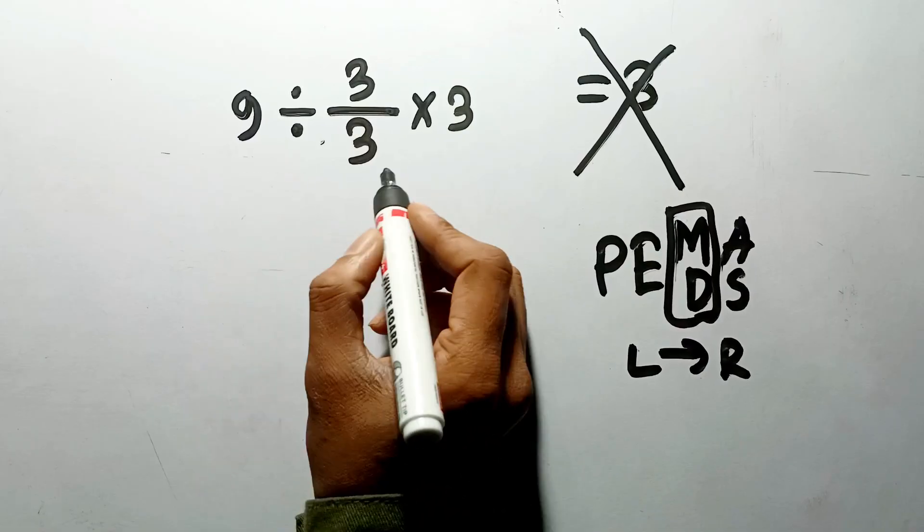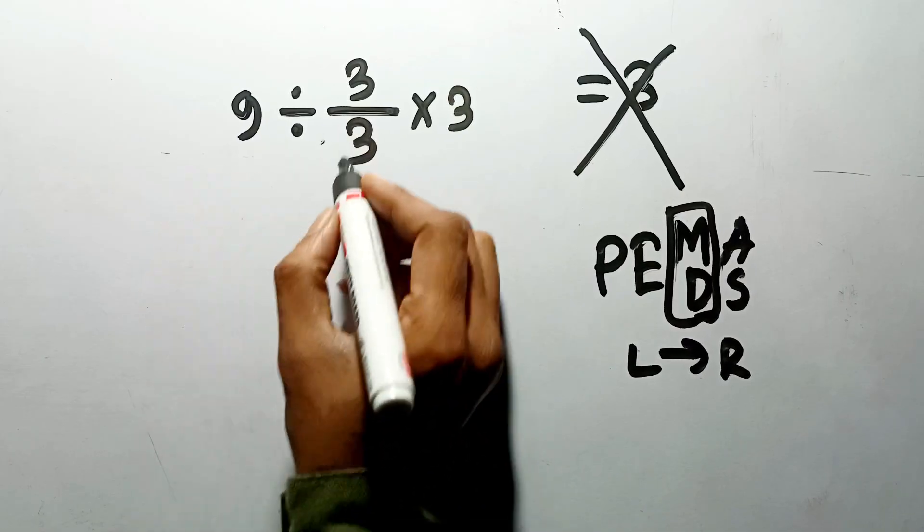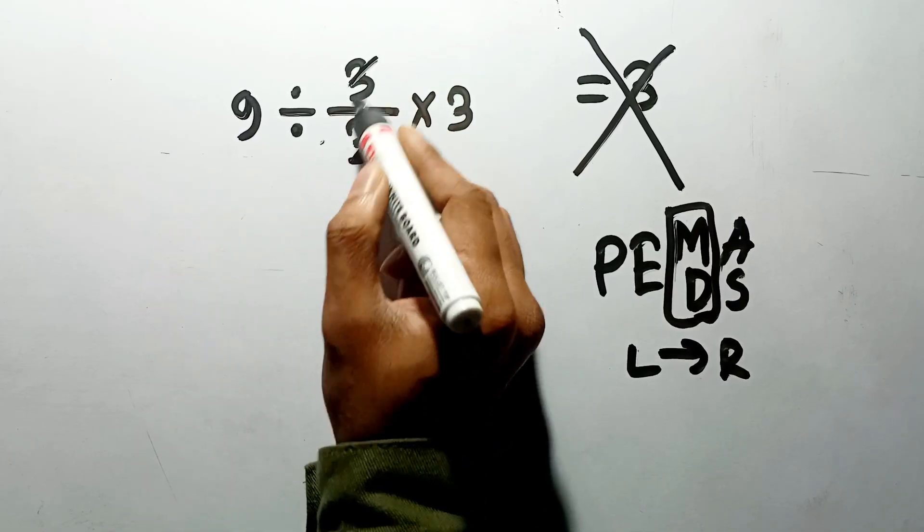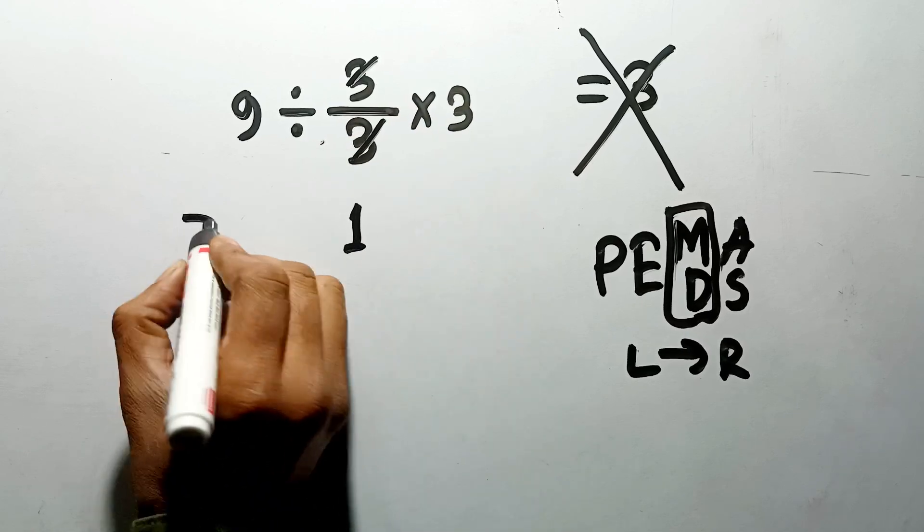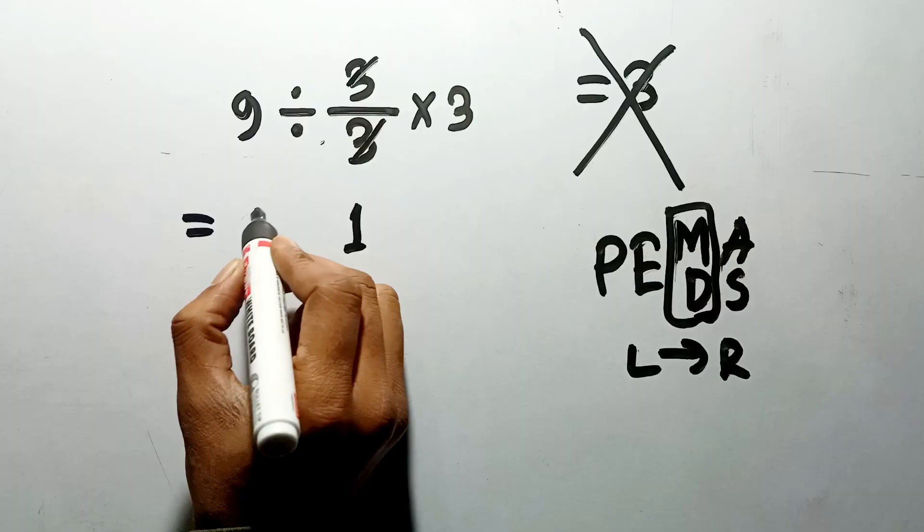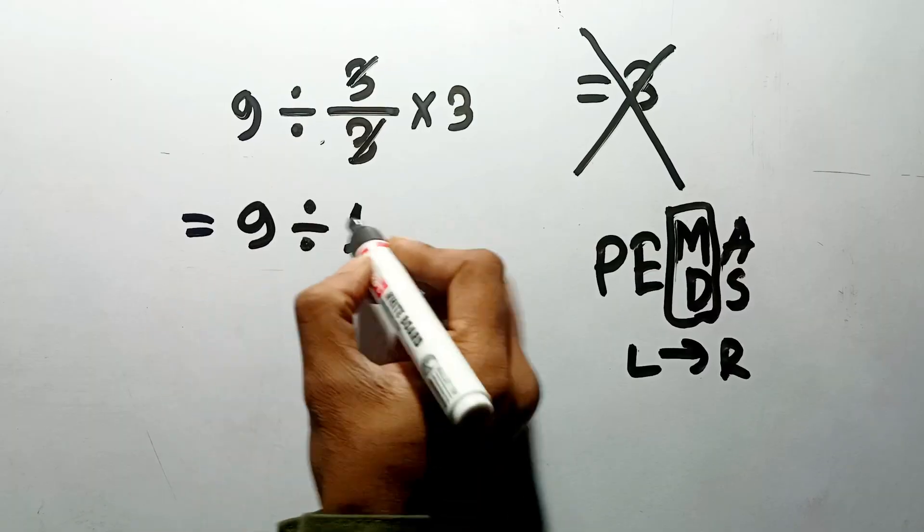So first, we handle this fraction. The 3 over 3 acts as a single unit. 3 divided by 3 gives us 1. So now the equation looks different. We have 9 divided by 1 times 3.